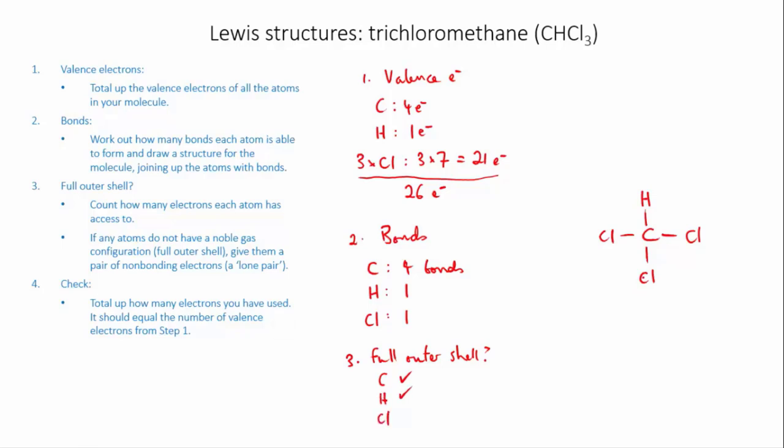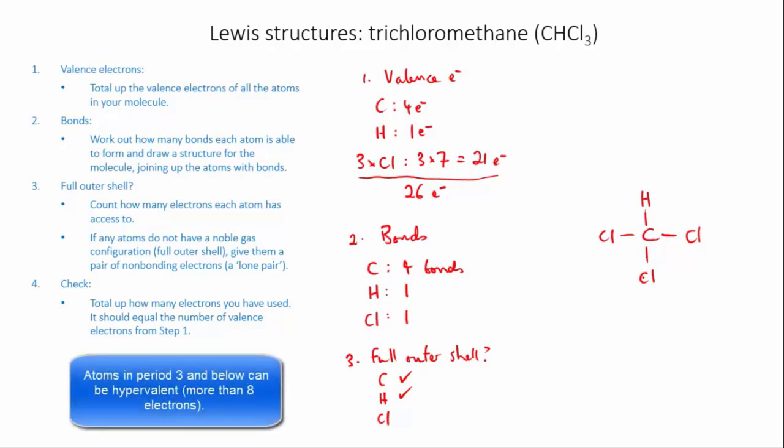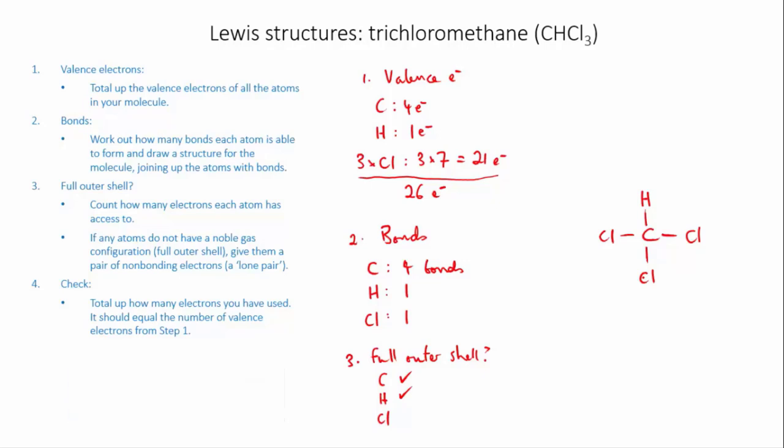The chlorines, however, have only formed 1 bond, which gives them 2 electrons, but they need 8. Now, if you recall, I told you that chlorine was an exception to the rule, meaning that it could accept more than 8 electrons. However, the default is 8, so you shouldn't try and give the hypervalent atoms more electrons than they need, unless it's absolutely necessary. So we're going to go with the default here.